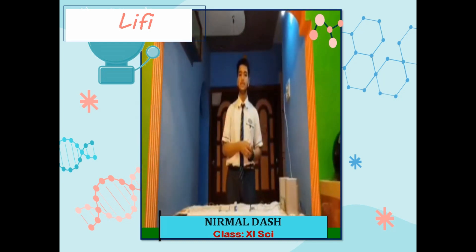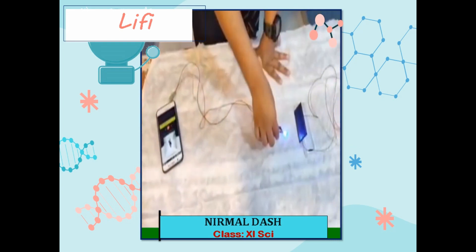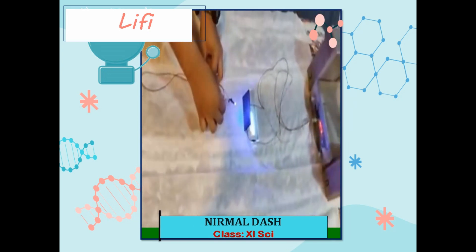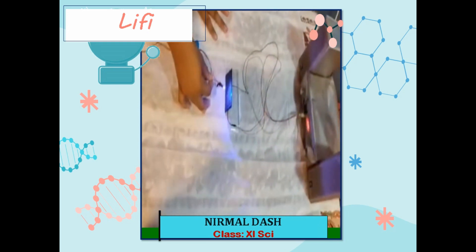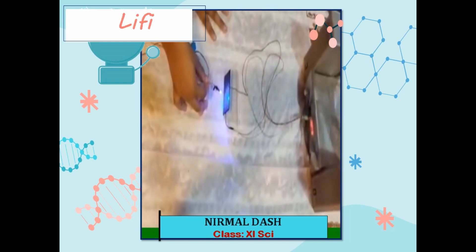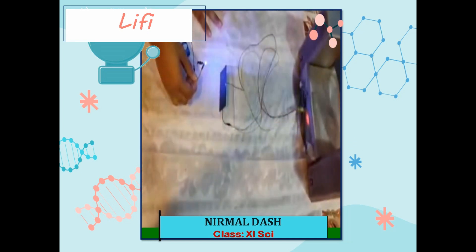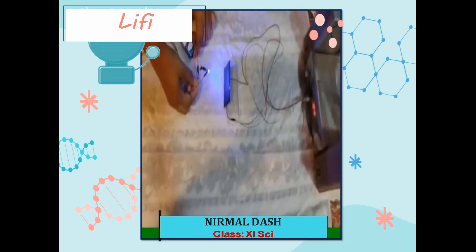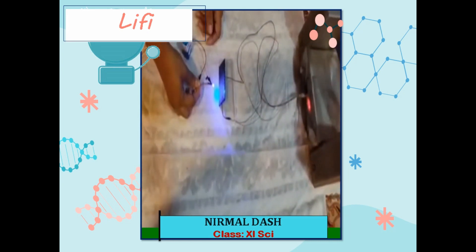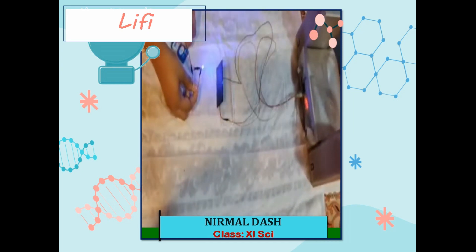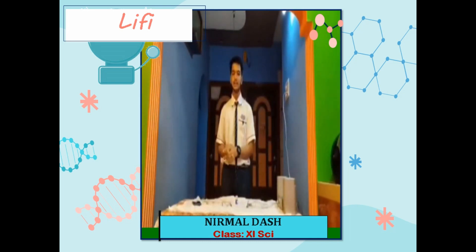Let us see how this transmits data signals from one end to the other. The jack of the AUX cable is inserted into the phone, and the bulb starts glowing. When a song is played on the phone and the LED bulb is brought near the solar panel, the audio is transmitted. When the light is removed from the solar panel, the speaker stops working. When the light is blocked, the song cannot be heard. This is how Li-Fi transmits data from one end to another with the help of LED signals.